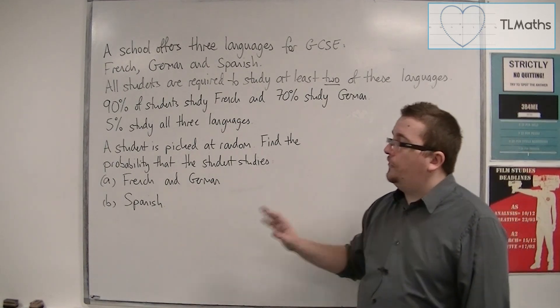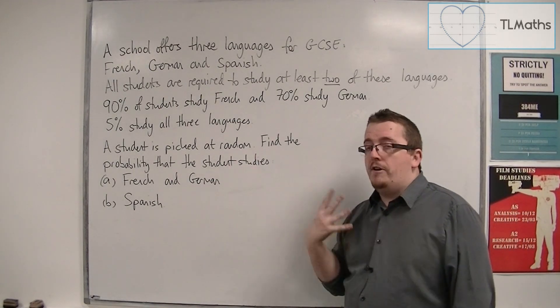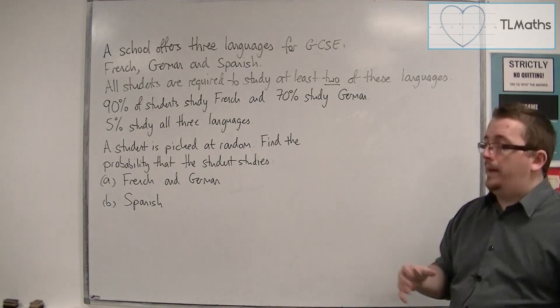A student is picked at random. Find the probability that the student studies (A) French and German and (B) Spanish.